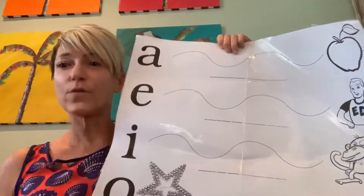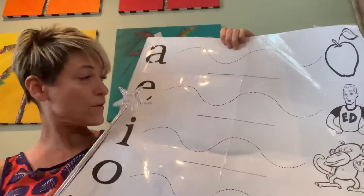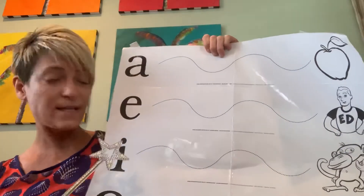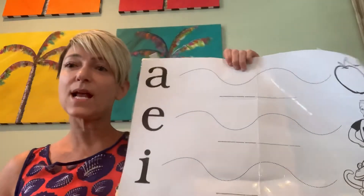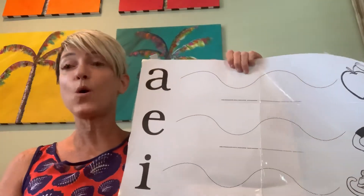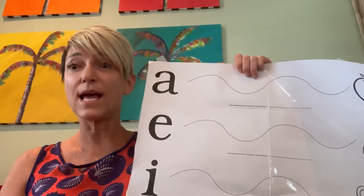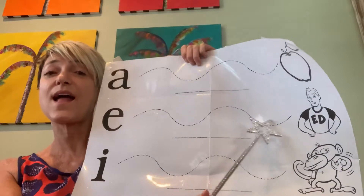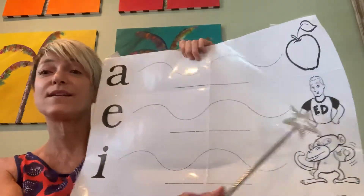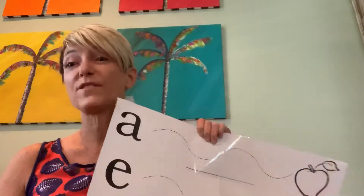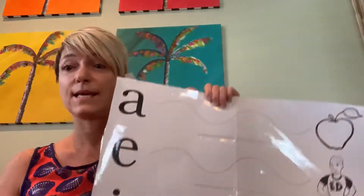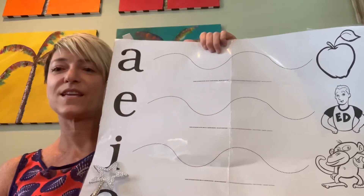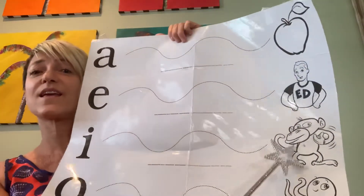Now I want to go through a couple of vowels that get mixed up: E and I. So E, you're going to open your mouth halfway. E. Ed. I - you open your mouth just a little bit. I. Itch.